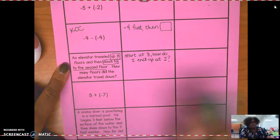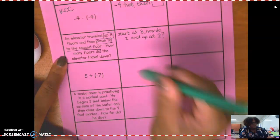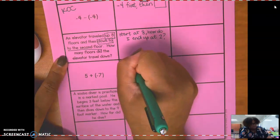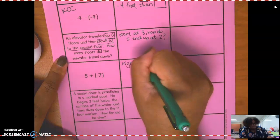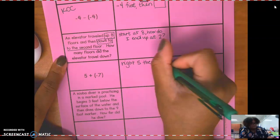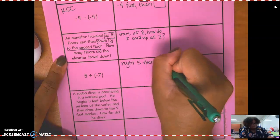Here I'm starting at five plus negative seven. So you're going to go to the right five, then left seven.